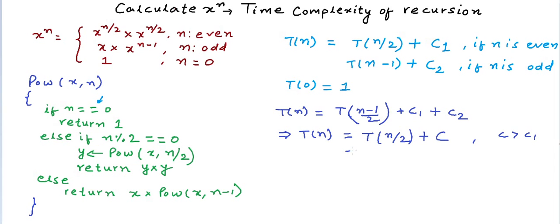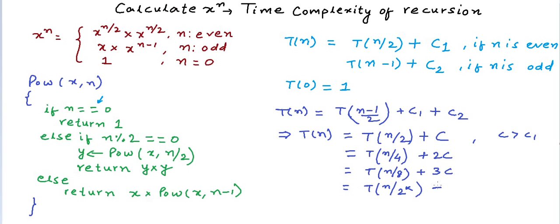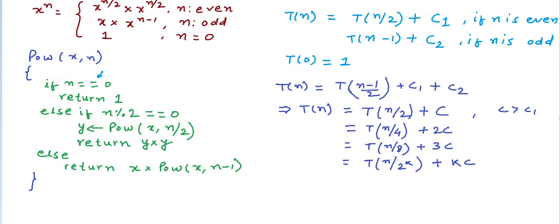Now let's reduce this expression. T(n/2) can be written as T(n/4) + c, so this becomes T(n/4) + 2c. We can go on: T(n/8) + 3c, and in generic form, T(n / 2^k) + k·c. If n is a positive integer and we keep dividing by two, we can never reach T(0), so let's define T(1) as a base case. Since one is odd, T(1) equals T(0) + 1, and T(0) is one, so T(1) equals 1 + c2.